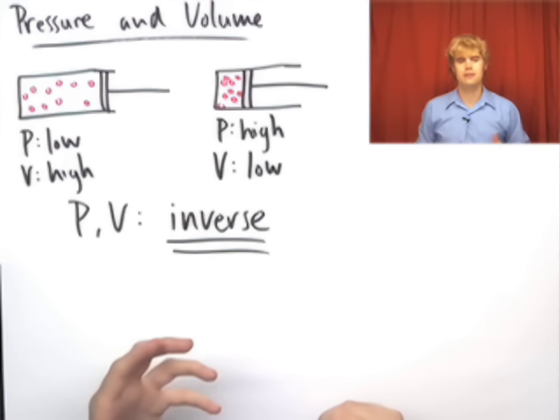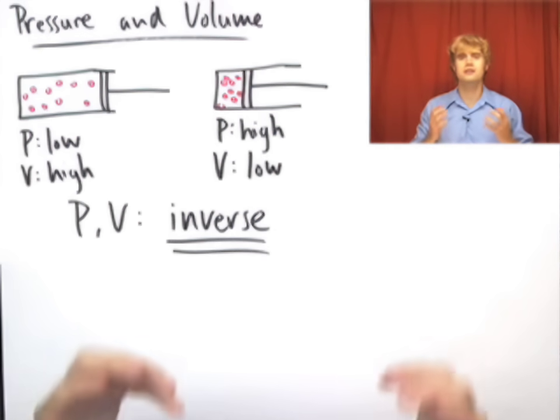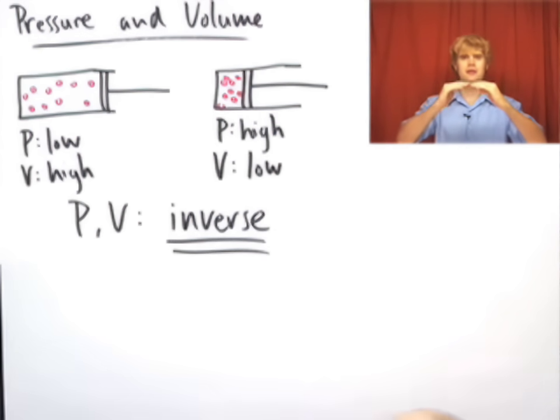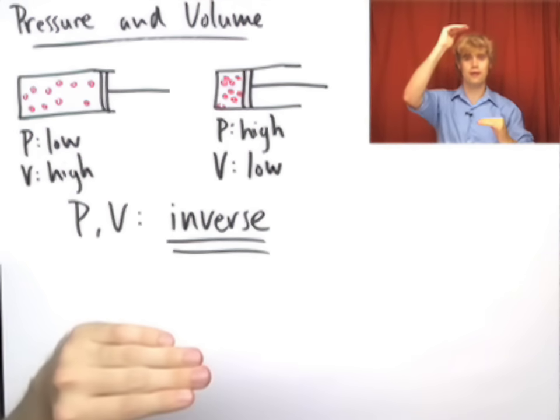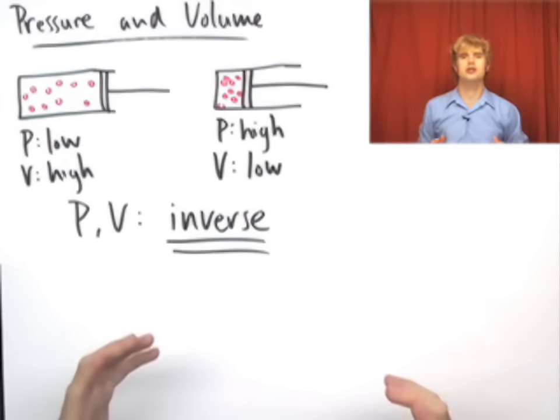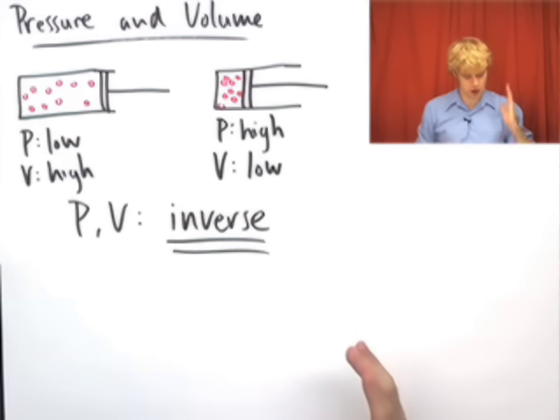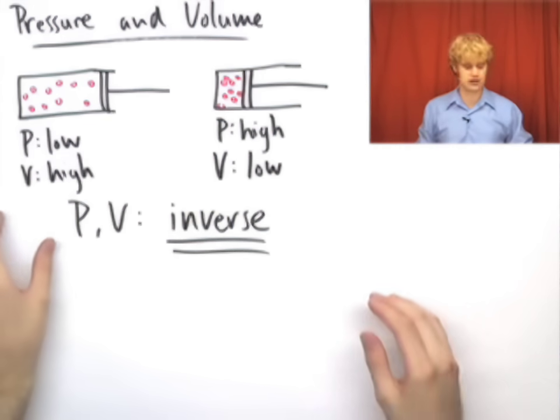You're familiar with an inverse relationship because you see this a lot with the cost of things that you buy. As something becomes more expensive, fewer people want to buy it. On the other hand, as the price of something lowers, more and more people want to buy it. So that's an example of an inverse relationship too, things moving in different directions. Pressure and volume also move in different directions because they have an inverse relationship.